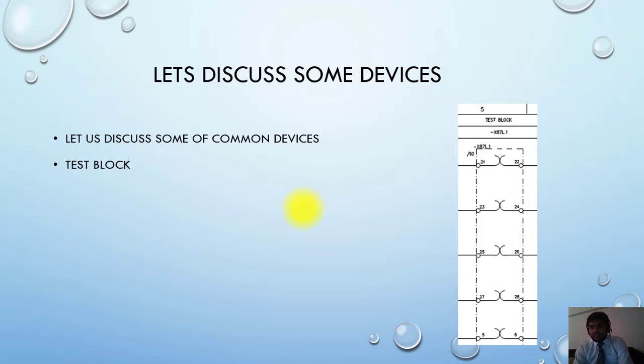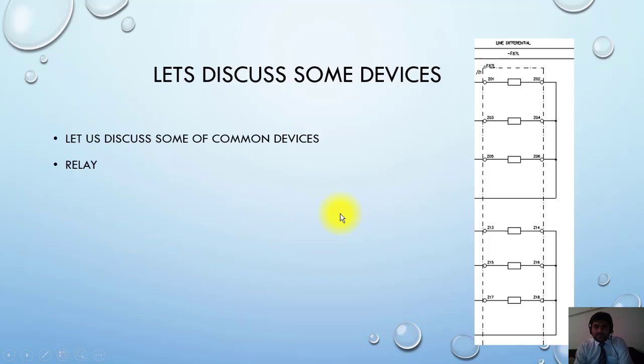Next is the symbol for a test block. This is named as 87X 87L.1. 87 that we have seen is for differential. So this is a test block for differential relay. What is the function? Just brief information. You have to insert a plug here. The plug will isolate 21, 22 and these points, and then you can inject different quantities into the relay to simulate a fault. This F87L is basically a differential relay, and these are the current inputs shown here for one side, and this is the current input for another side. You can see here the terminal numbers are also mentioned.